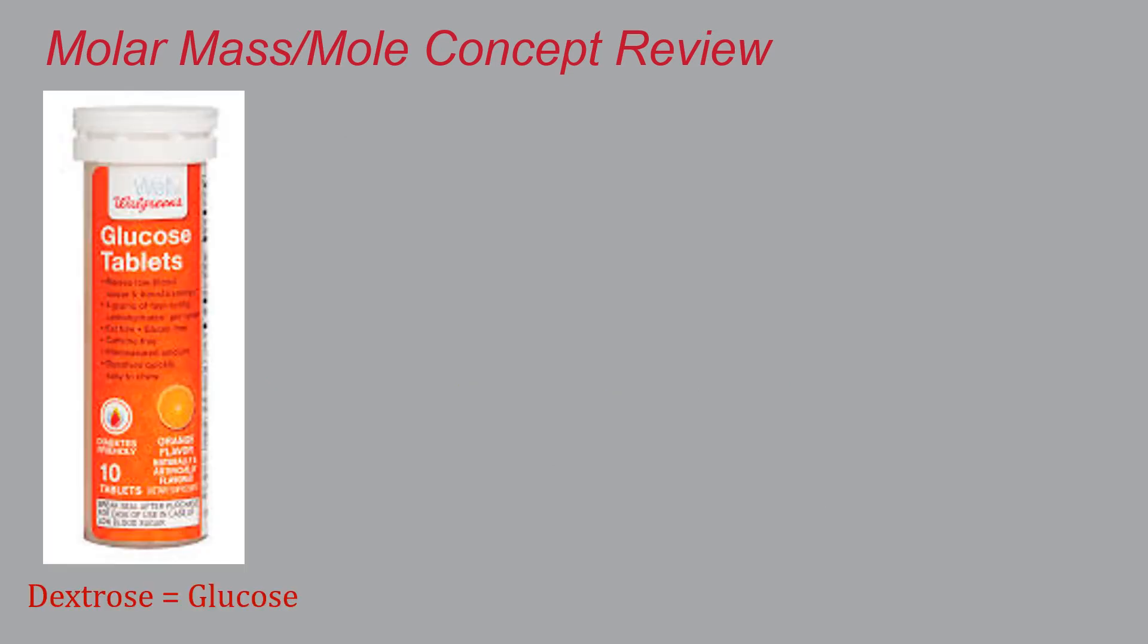Remember, dextrose is equal to glucose. This is the sugar that is found in tablets that people that are subject to low blood sugar or hypoglycemia carry around in case your blood sugar drops and they get a little lightheaded. This stuff just goes directly into your bloodstream and is used by your body almost instantly. If you read the labels, it will tell you that each tablet contains four grams of dextrose.